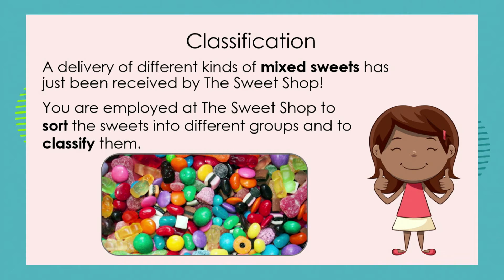Here's where the fun starts. A delivery of different kinds of mixed sweets has just been received by the sweet shop. You are employed at the sweet shop to sort the sweets into different groups and to classify them. You get this whole pile of mixed sweets and you have to sort them into different kinds. So if somebody comes in and says their sweets mustn't have any chocolate in them, you can direct them to the right group. It's important that we sort items according to their characteristics — and keep thinking, this is what scientists do when they sort different elements.